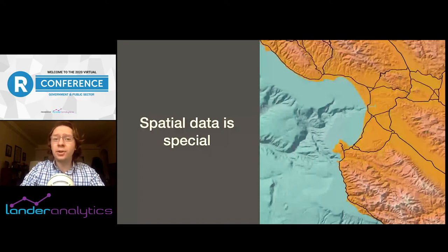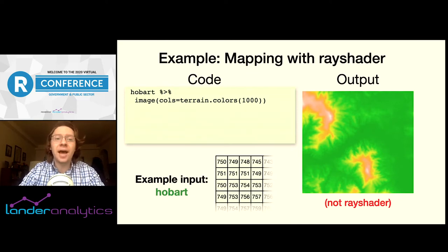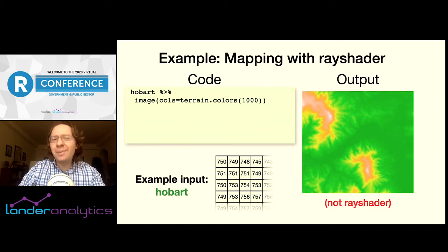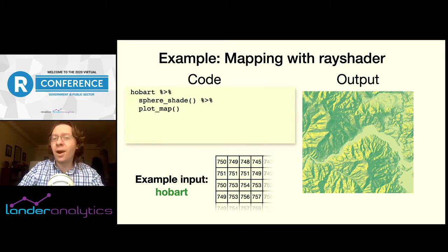RayShader does all of this with a straightforward pipeable interface where you use elevation data to generate shadows and maps. The Hobart object at the top of the chain is just an R matrix, a 2D array of elevation values at every point. I've plotted the data with base R's image function with terrain colors, which doesn't really represent the terrain in a very understandable way. So we can use RayShader to produce something much nicer. We can first generate a base color layer with the sphere_shade function in RayShader, which colors in the map using the angle and slope of the terrain. We can already see how this is far better than the pure height-to-color mapping, because what were once blobs of colors are now much more obviously mountains and valleys.